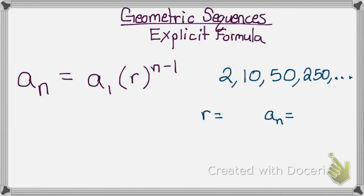As you can see right here, this is the explicit formula. a sub 1 represents your first term. r is your common ratio. And n minus 1 as the exponent will remain as n minus 1.